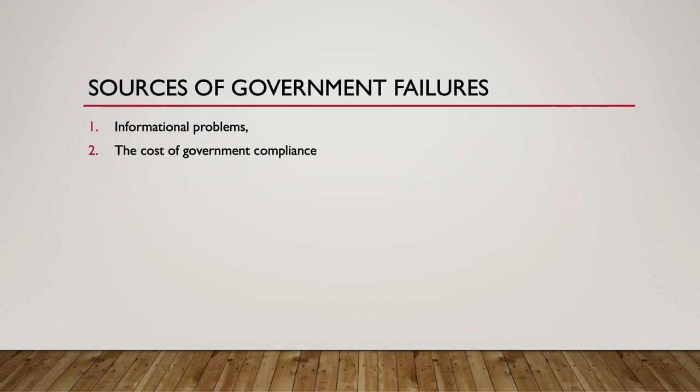Second is the cost of government compliance. When governments impose regulations, market participants expend large amounts of resources in order to comply with policy. According to the IRS, individuals and businesses in the U.S. spend billions of dollars every year just to file taxes. The third source is government corruption and kleptocracy. When the level of corruption in government is high, as is the case in a kleptocracy, policy makers implement policies in an attempt to seek personal gain at the expense of the interests of the general public.